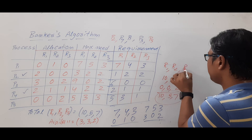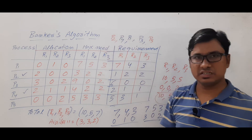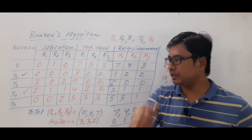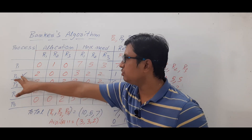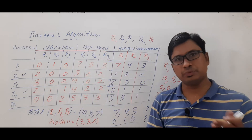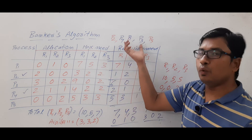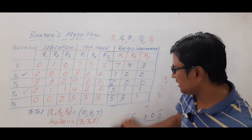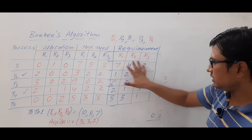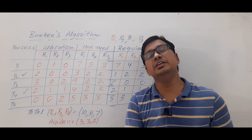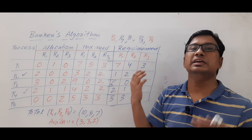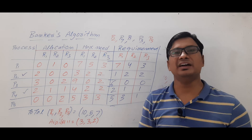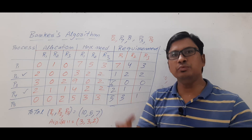After executing all processes, we have 10 instances of R1, 5 of R2, and 7 of R3 available. The system is safe. The safe sequence is P2 → P4 → P1 → P3 → P5. This is one valid safe sequence; if we had started with P4 instead of P2, we would get another safe sequence. If at any point no process requirement can be satisfied with the current availability, the system is in an unsafe state and deadlock may occur.